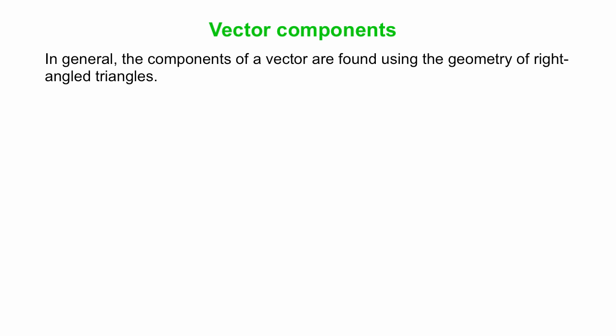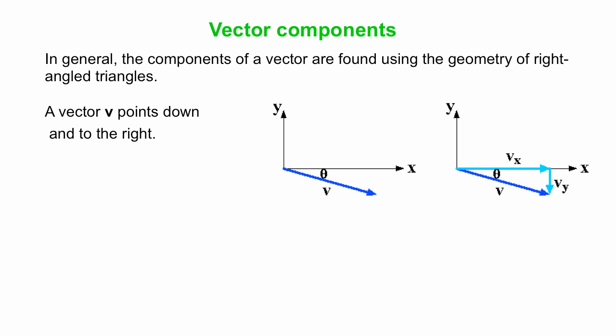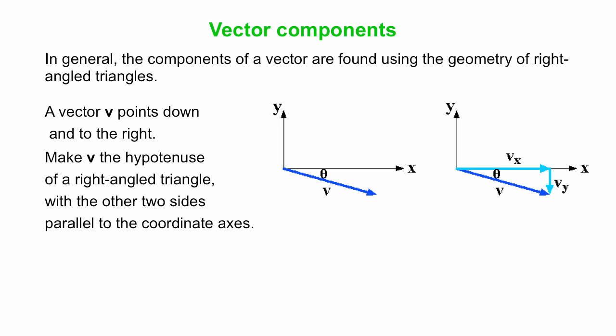Okay, what about vector components? So, we're going to use the geometry of right angle triangles and sines and cosines to help us. So here we have a picture, and first we have a vector V that points down to the right. Then we'll impose a coordinate system on this. We'll have positive x to the right, positive y up. And we want to know how much of V is in the x direction, we'll call that Vx. How much of V is in the y direction, we'll call that Vy. Okay, so all we did is we drew kind of a right angle triangle with the two sides parallel to the coordinate axis.